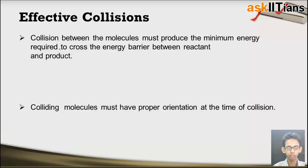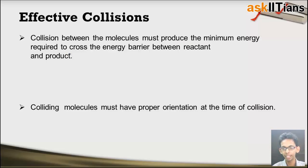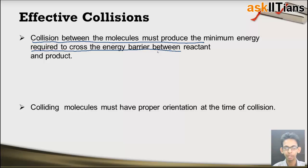For being an effective collision, the collision between the molecules must produce the minimum energy required to cross the energy barrier between the reactant and product. The collision between the molecules must produce the minimum energy required to cross the energy barrier between the reactant and product. Now what is this energy barrier?